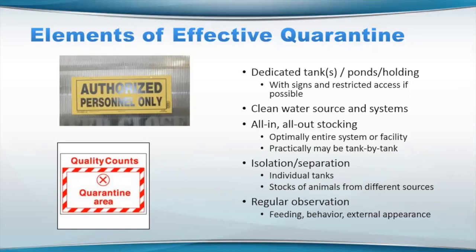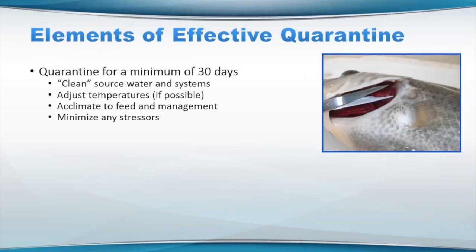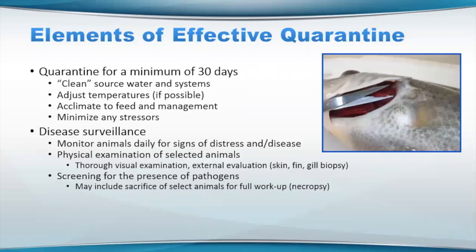Observation is pretty critical, and having very good staff that know what they're looking for, really pay attention to detail, aren't just throwing food in and leaving, but really observing — looking at behaviors and looking at the animals as they feed, or depending on your situation, being able to see if there's anything abnormal externally on them. So again, three weeks, maybe 30 days if you can. Clean water and systems, temperature acclimation, feed management, minimize stressors, surveillance — basically trying to look for potential disease issues, maybe even grabbing samples from healthy animals. Monitor them daily for any distress or disease, physical exam, visual and external. If you're dealing with fish, typically we'd look at skin, fin, and gill biopsies at least, and then screening for specific pathogens. If you can sacrifice some animals with your health people to do more complete diagnostics, that's ideal.